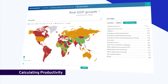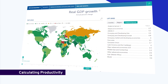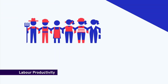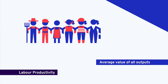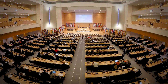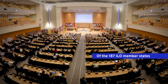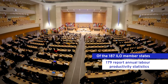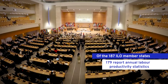Today, economists use different methods for calculating productivity. One of the most widely used is labor productivity. This measure estimates the average value of the outputs that have been created per worker or per hour worked annually in a country. Out of the ILO's 187 member states, 179 report annual labor productivity statistics.